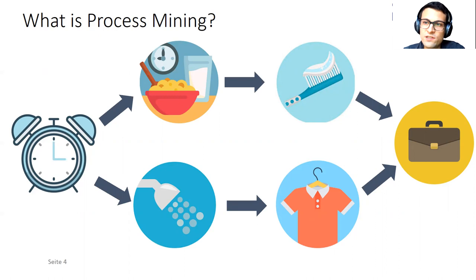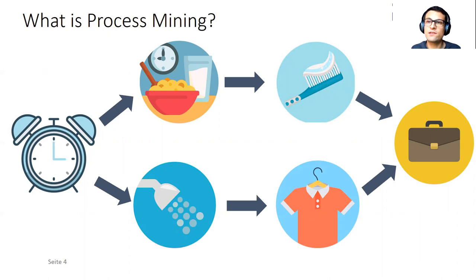What we see here is a bunch of activities that I perform in order to achieve a goal. In this example, the goal is to get to work or to start working. But in general, anyone executing a bunch of activities to achieve a goal is actually executing a process.